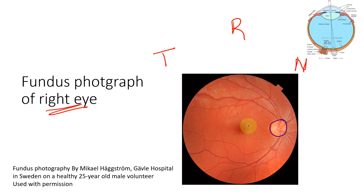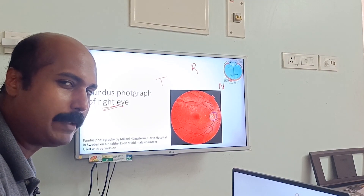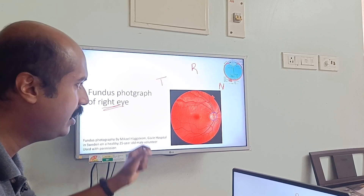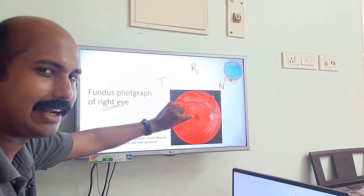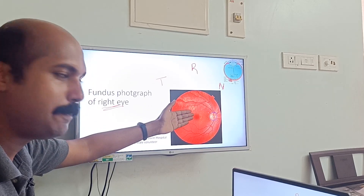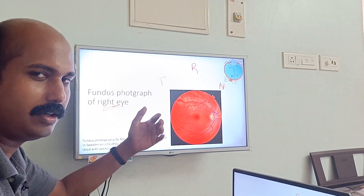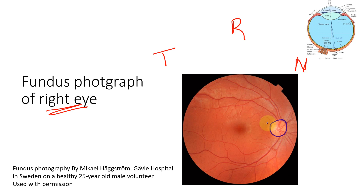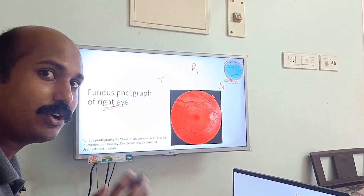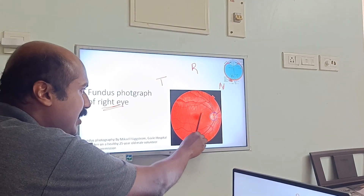On the temporal side you can see a slightly darker point - that is called the macula. The macula is characteristically a little more pigmented because the retina here is thinner, and the retinal pigment epithelium casts its melanin pigment color more prominently on a fundus image. That is why it looks a little darker. So this is the macula and this is the optic disc.